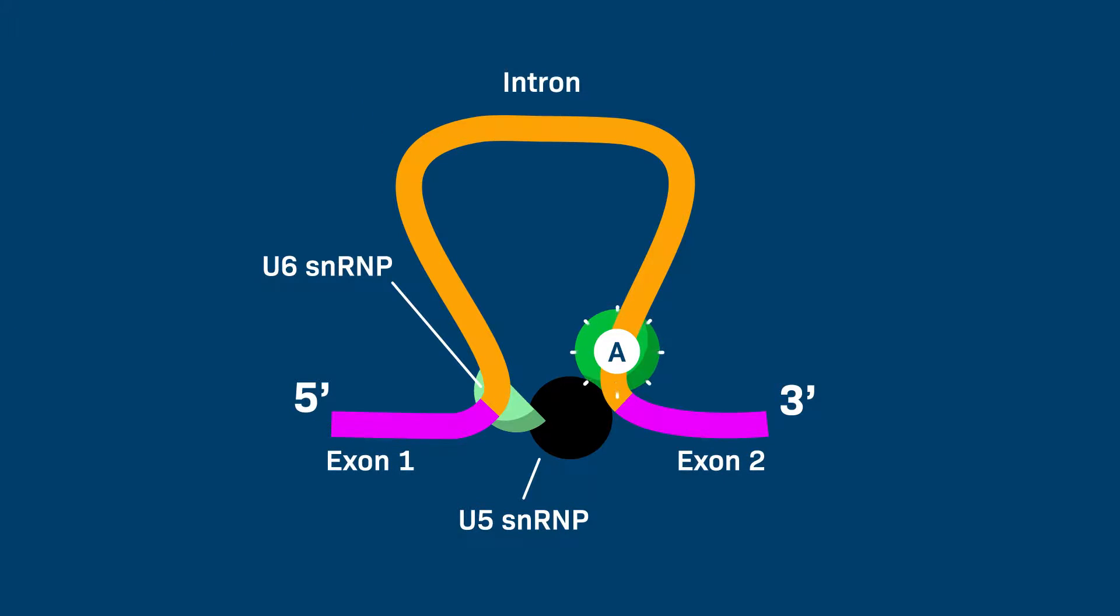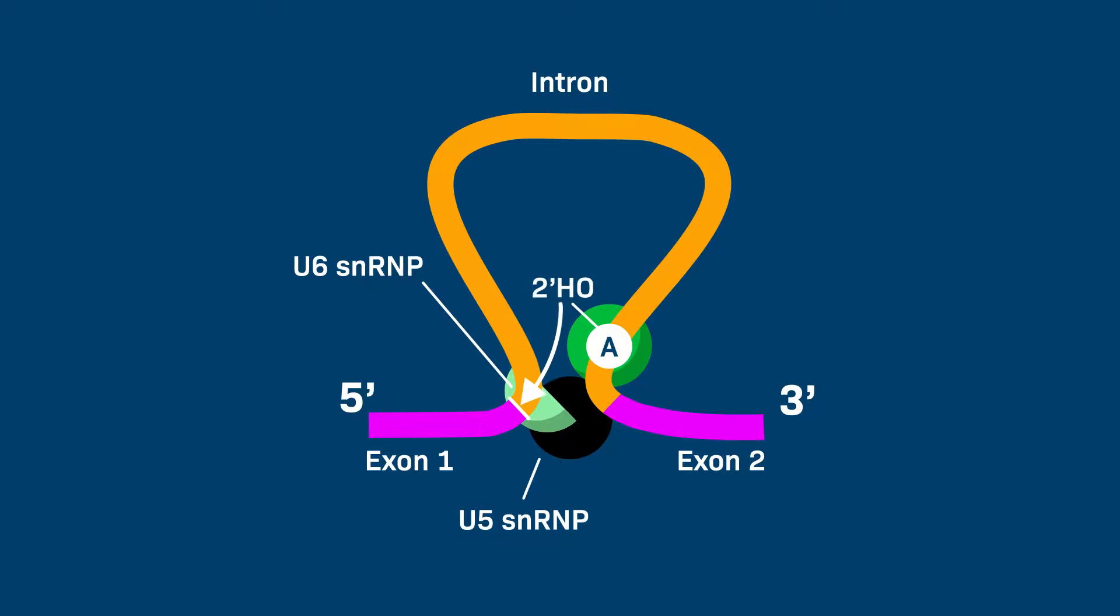Now in position, the branch point adenine in the intron attacks the 5' splice site, cutting the sugar phosphate backbone of the RNA. The end of the intron covalently bonds to the adenine, forming a lariat structure.